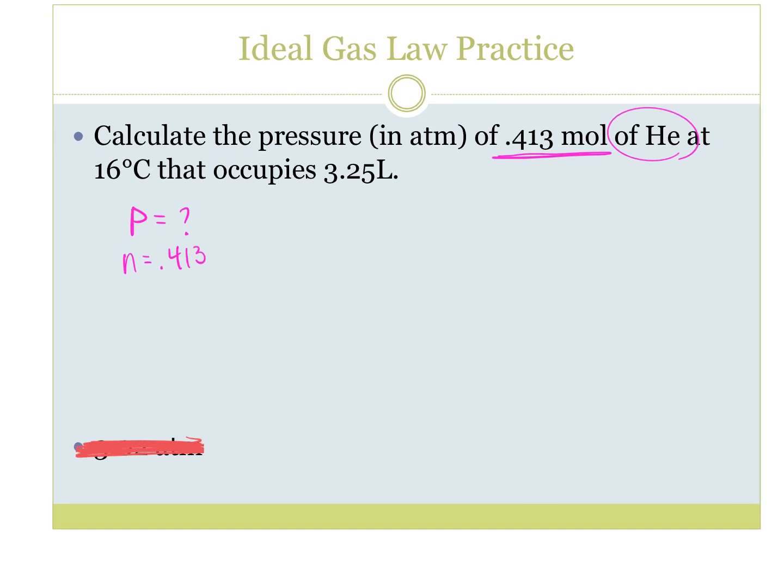We have a temperature of 16 degrees Celsius. Can we keep it at 16? No. But how do we convert? 16 plus 273. So we get 289 Kelvin. And then our volume, it looks like it's in liters. Is that what we want or no? It is. So once we've got that set up, did you notice how, did it give us R in our problem?